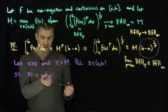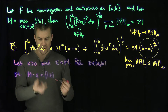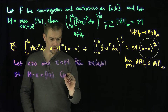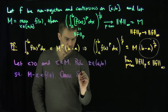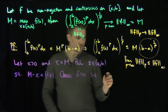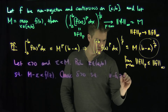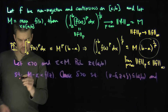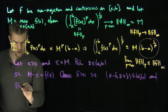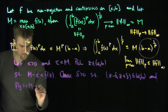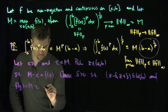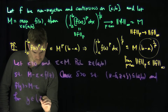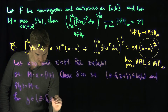Since this is the case, by continuity I can find a small enough neighborhood of the point z inside the interval [a, b] such that this inequality persists. Choose delta greater than 0 such that the interval [z minus delta, z plus delta] is contained in [a, b], and f(y) is bigger than M minus epsilon for all y in [z minus delta, z plus delta].